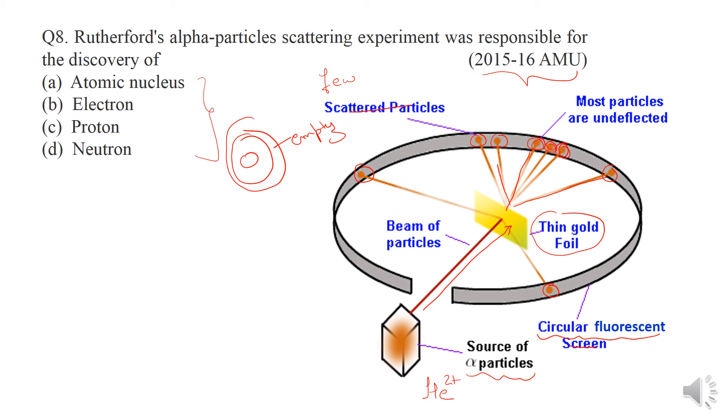More alpha particles went straight through, which showed that most of the atom's space is empty. Some particles were slightly deflected left and right. Alpha particles are positively charged, and like charges repel each other.